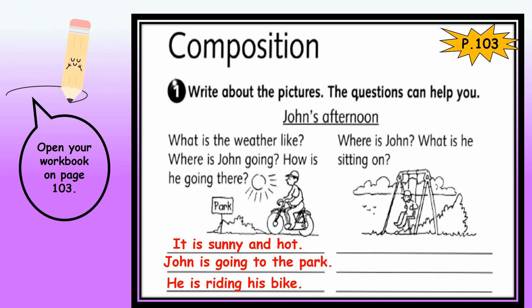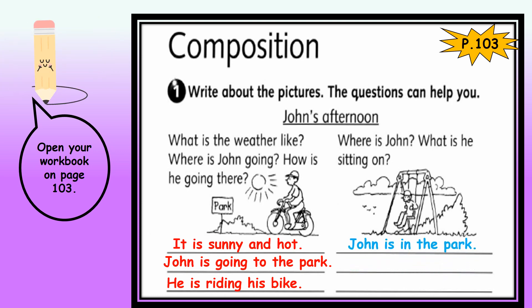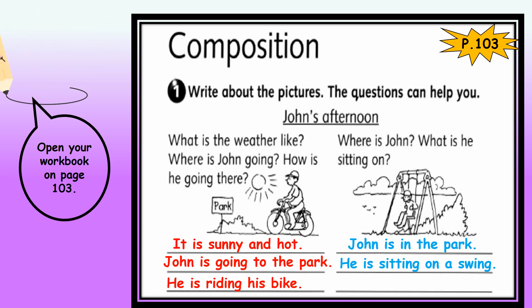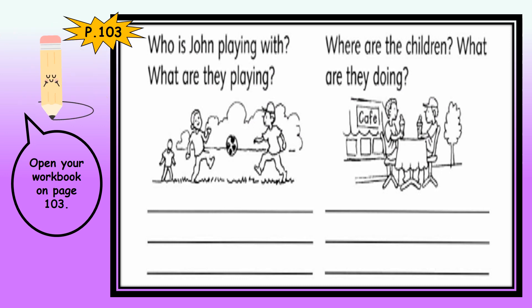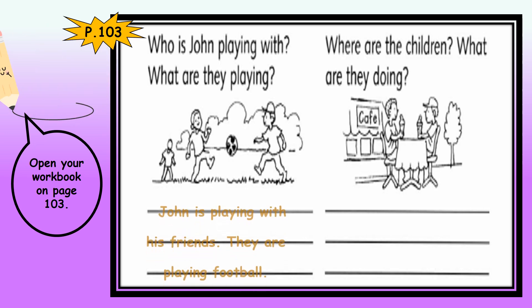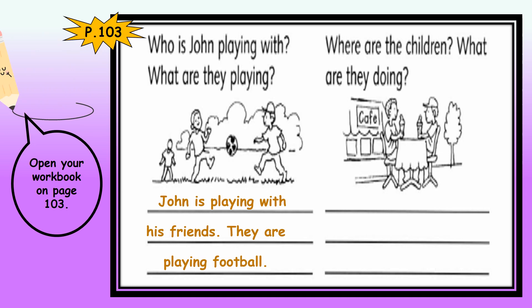Where is John? John is in the park. What is he sitting on? He is sitting on a swing. How about the third picture — who is John playing with? John is playing with his friends.